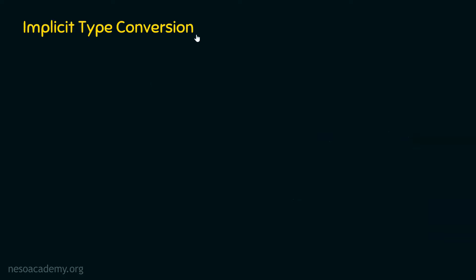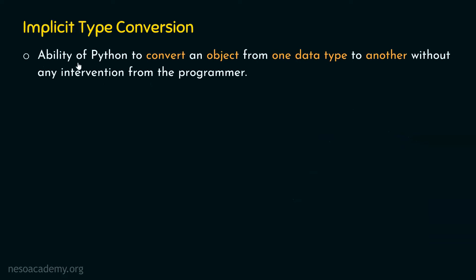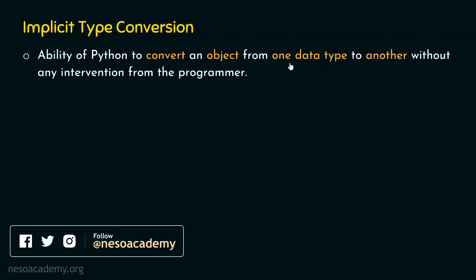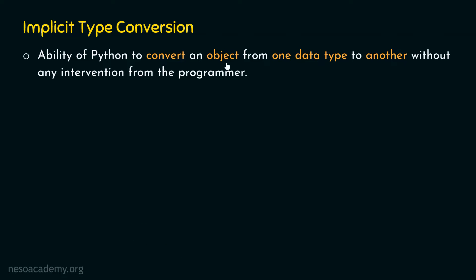Implicit type conversion refers to the ability of Python to convert an object from one data type to another without any intervention from the programmer. The conversion happens automatically — the programmer is not involved in the conversion process.